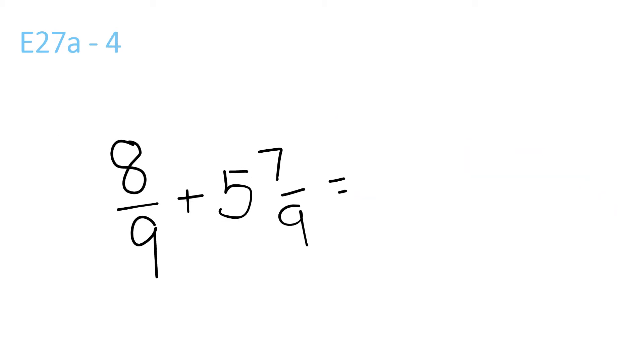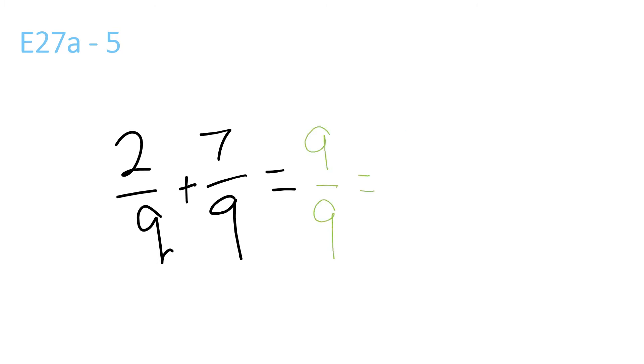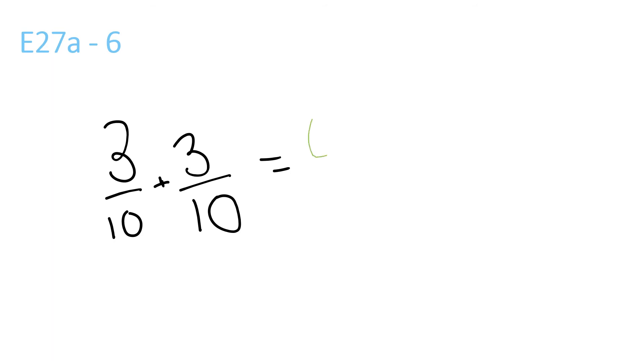Next question: 5 plus nothing is 5. 8 plus 7 is 15 over 9, which equals 6 and 6 over 9, which equals 6 and 2 thirds. 2 plus 7 is 9 over 9. If you have the same number over itself, it equals 1. 3 plus 3 is 6 over 10, which equals 3 over 5.